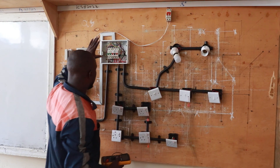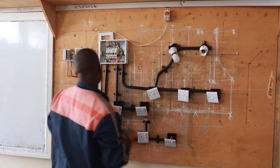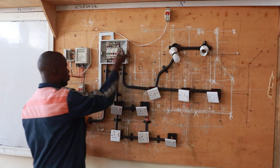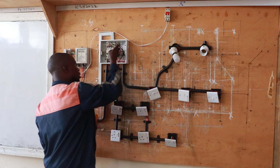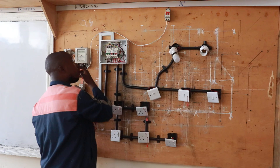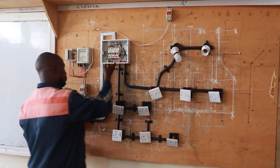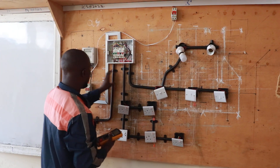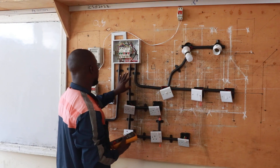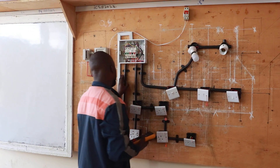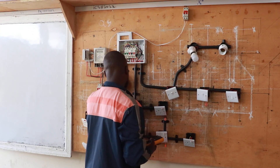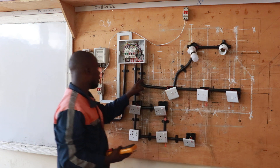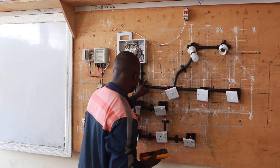Now from the distribution box, I have breakers for sockets, for light, and for cooker. I have power points for heavy loads, power points for light loads, and a lighting system.